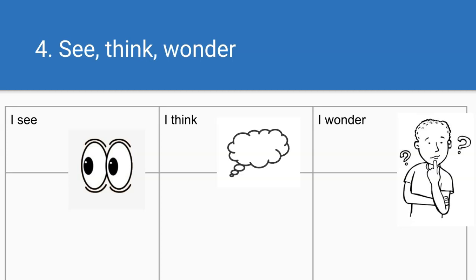The third column is the Wonder column. I ask my students to put their thoughts into questions in this column. Teachers are always asking students to ask questions — not because those questions are going to get answered, but because the question is further thinking. In the words from Project Zero's website: 'By encouraging students to wonder and ask questions, the routine stimulates curiosity and helps students reach for new connections.'